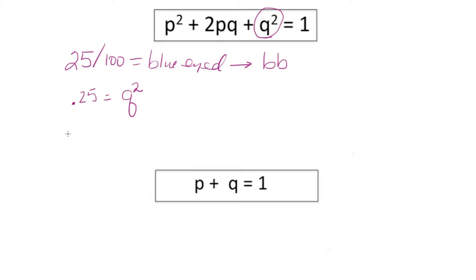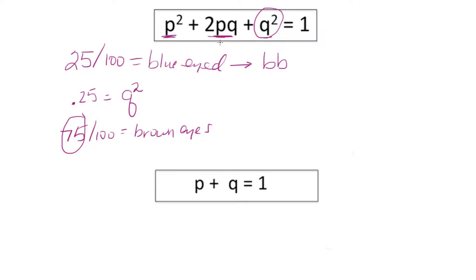We know there must be 75 people out of 100 who have brown eyes. The problem is, we don't know how many of those 75 are homozygous dominant versus heterozygous, because phenotypically they all have brown eyes. We'll need to use the Hardy-Weinberg equation to determine how many of those 75 are homozygous dominant and how many are heterozygous.